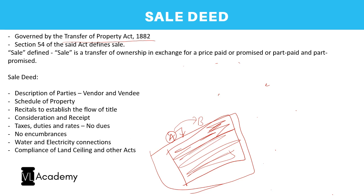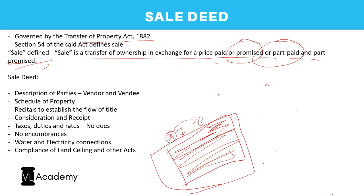The Transfer of Property Act defines sale as 'a transfer of ownership in exchange for a price paid or promised or part paid and part promised.' Even though the definition allows part payment, in practice a sale deed is usually executed only after the entire consideration has been paid.